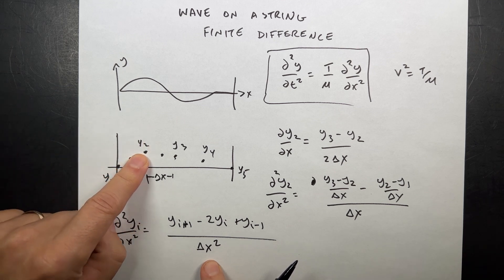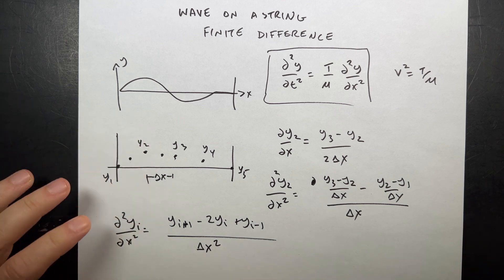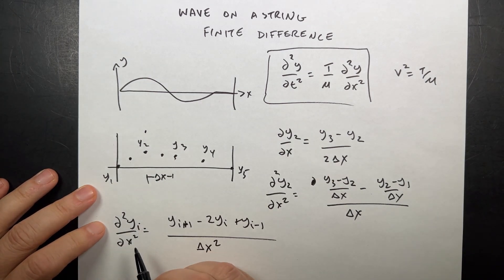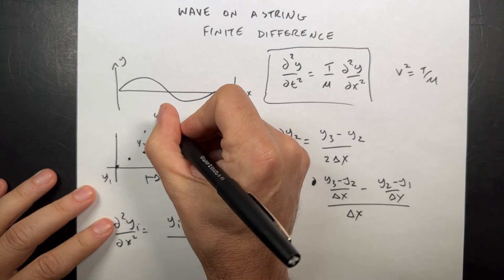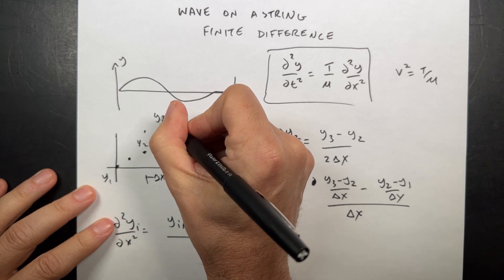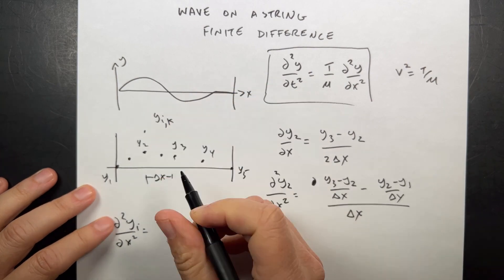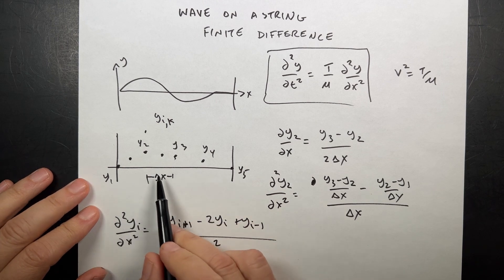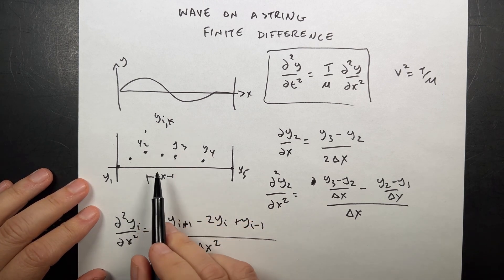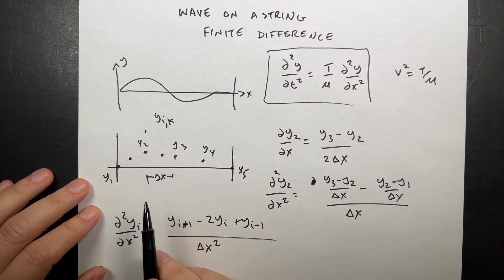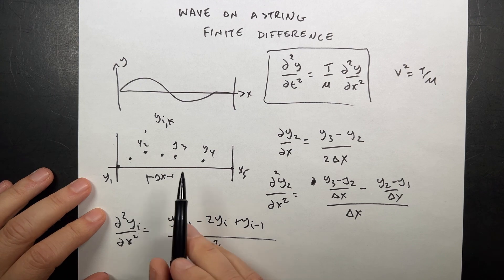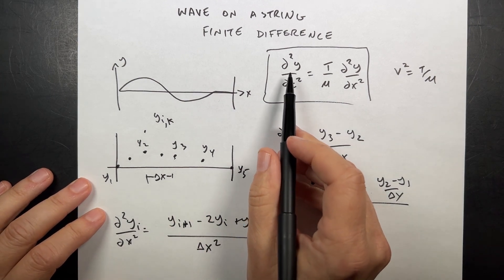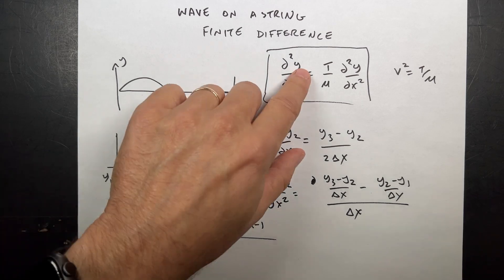These values can change in not just position but time, so we need a double index here. Each one of these points will have another time interval too. I can write this as y_i,k — where i is the space position and k is the time index — because we're going to break this into time intervals as well.